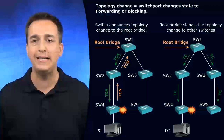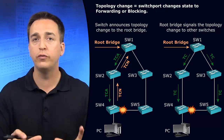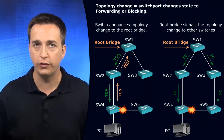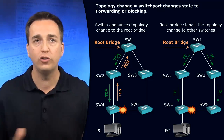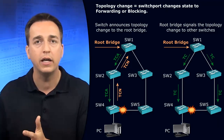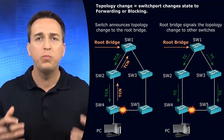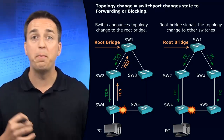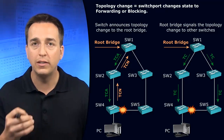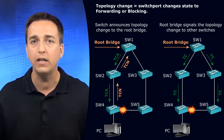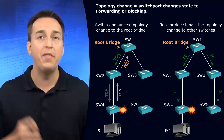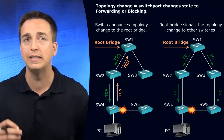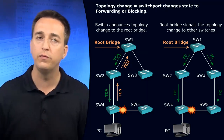Spanning Tree Protocol 802.1D takes a considerable amount of time to converge or rebuild the spanning tree topology when a change occurs. A topology change occurs when a port transitions from the forwarding state to the blocking state or the blocking state to the forwarding state. Ports going from blocking to forwarding have to run through the timers: potentially the max age timer of 20 seconds, plus the forward delay timer during the listening state of 15 seconds, and then another 15 seconds in the learning state — a grand total of 50 seconds.